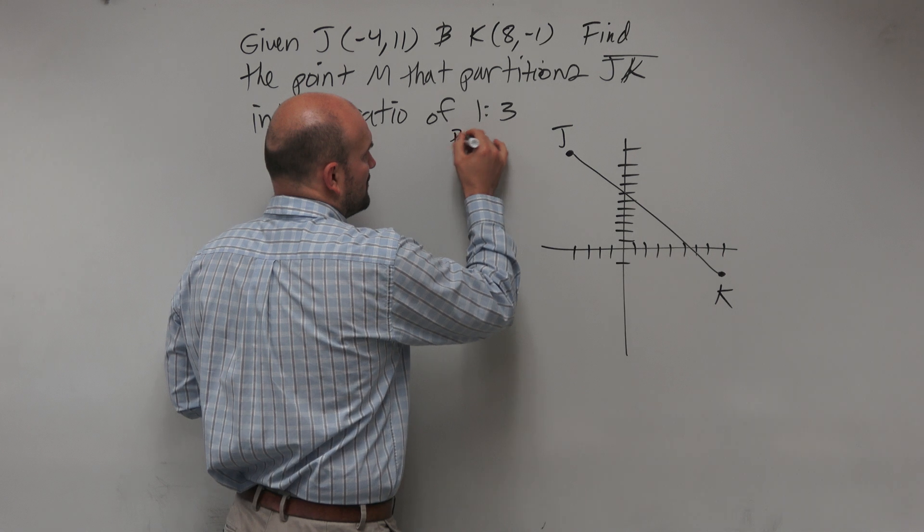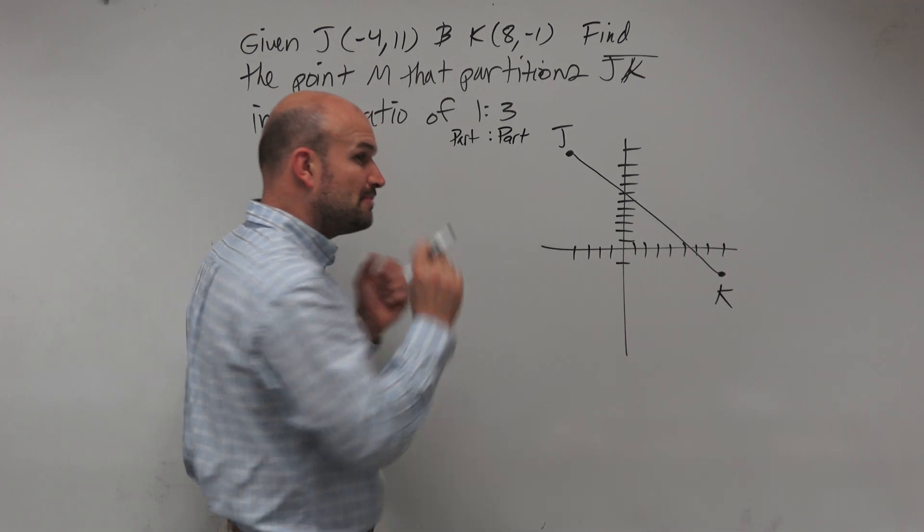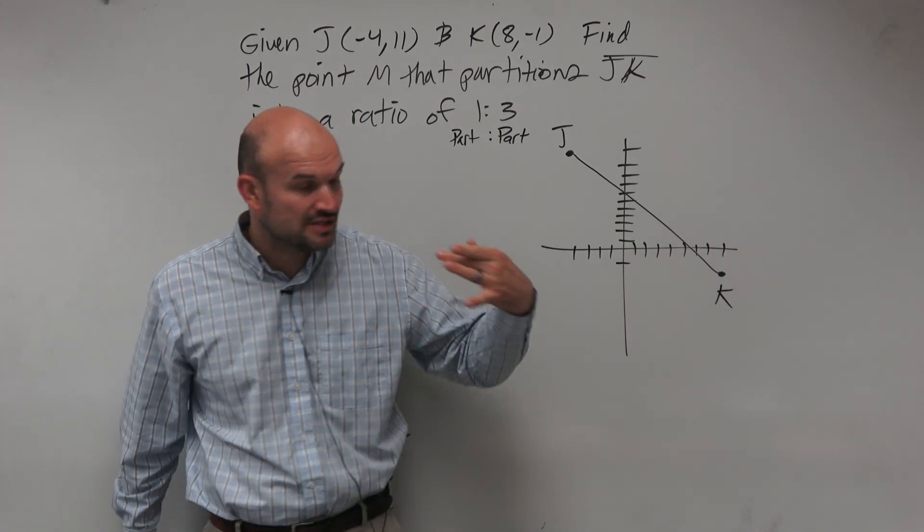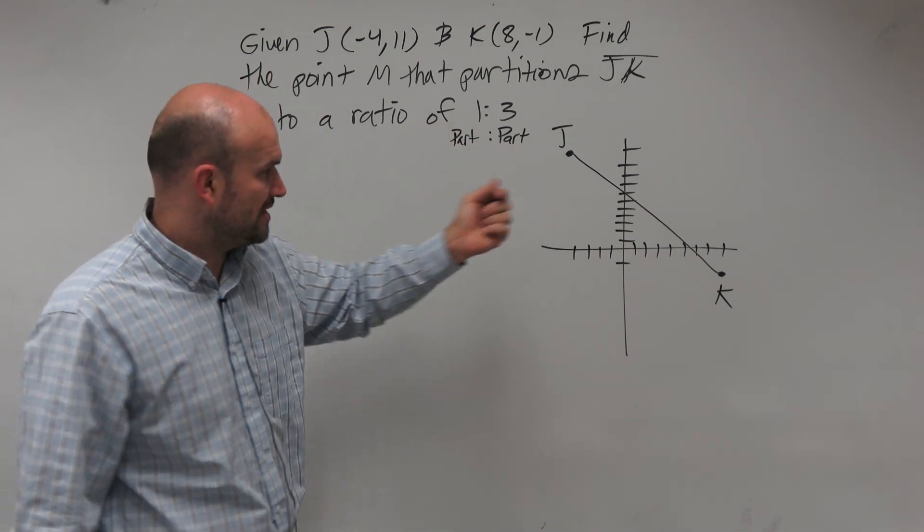So this is a ratio of part to part. And when you're partitioning, it's very important to determine: are you given a ratio that's part to part or part to whole? A lot of times, that will just be based on the notation that you're given. In this case, when they just say this ratio of 1 to 3, that's going to be a part to part ratio.